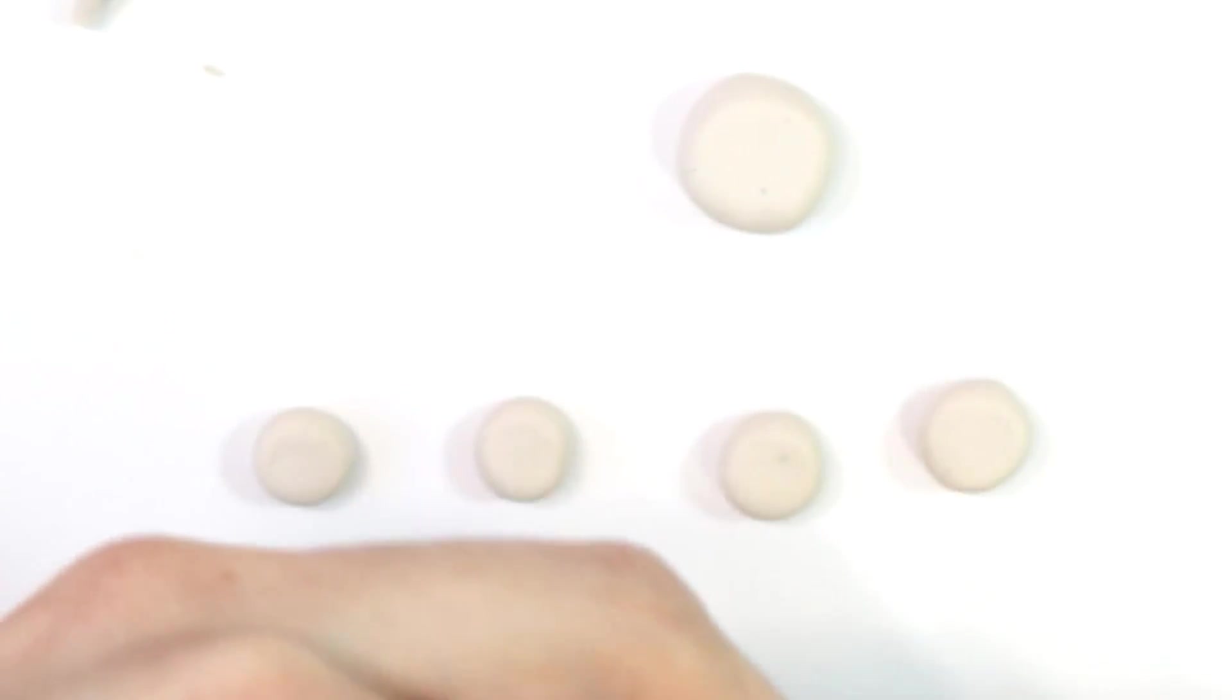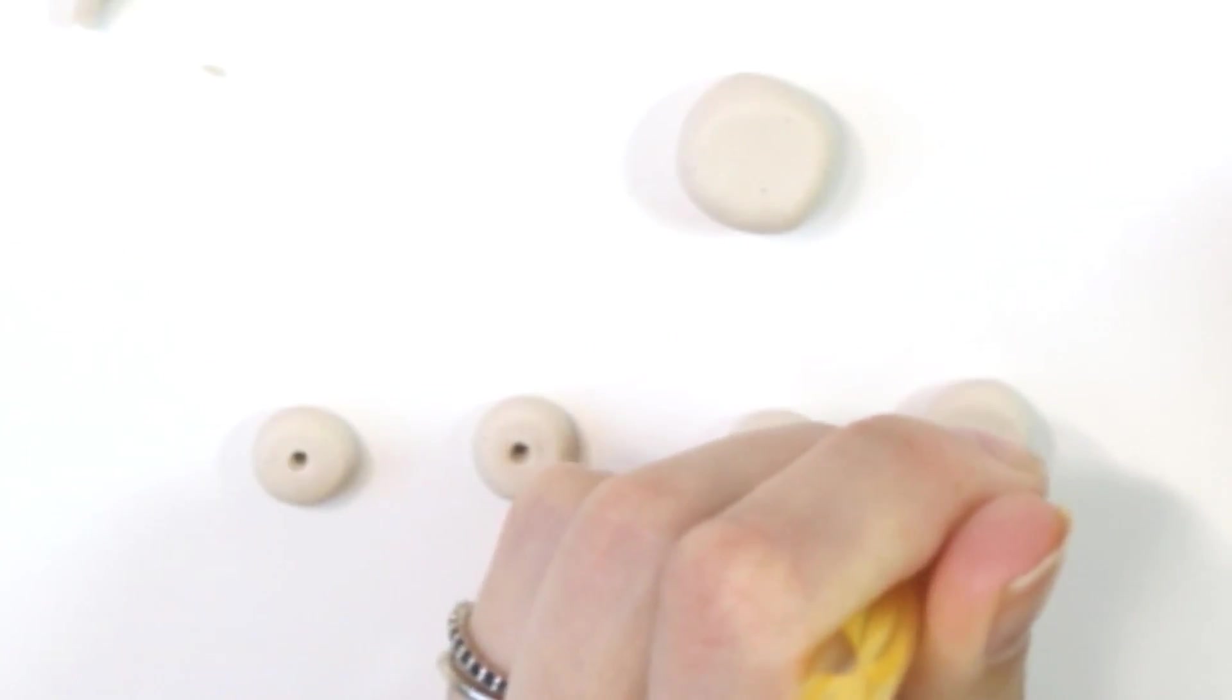Once we've done all five pieces, we're taking our dotting tool. If you don't have a dotting tool you can use a toothpick. We're just going to add in little holes so that it looks like a donut. Very simple.